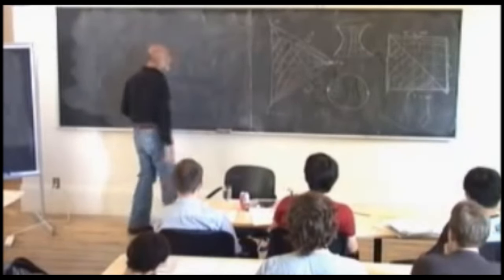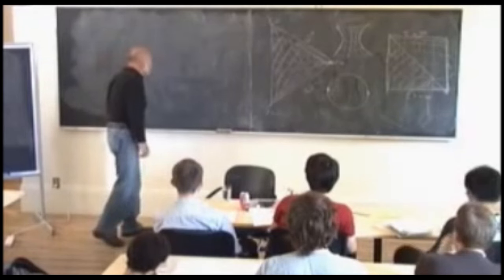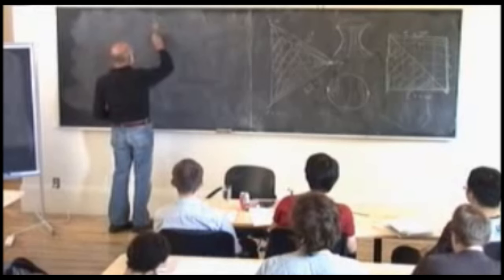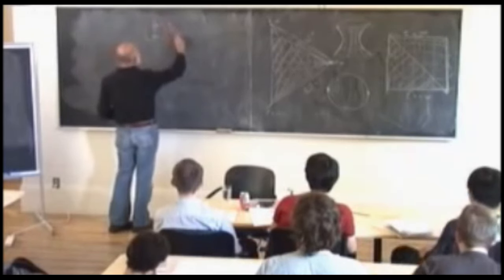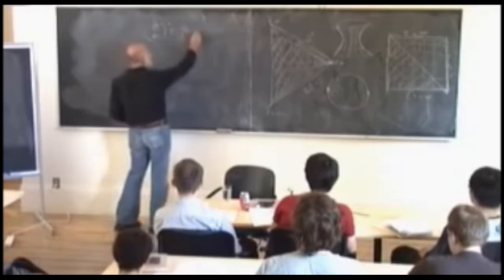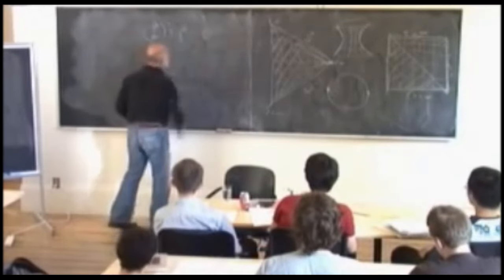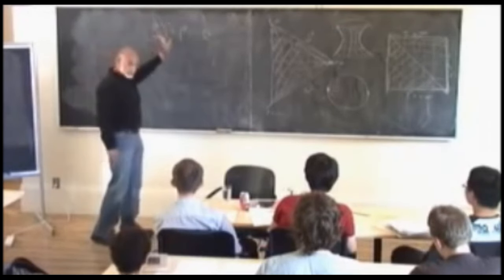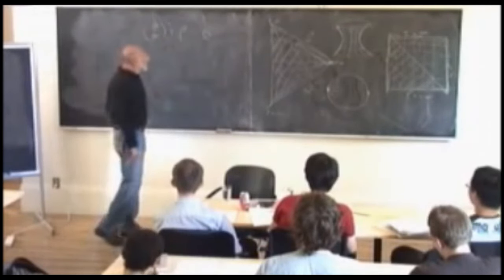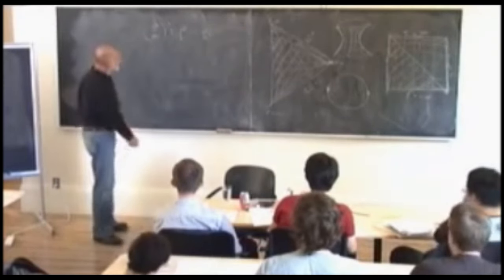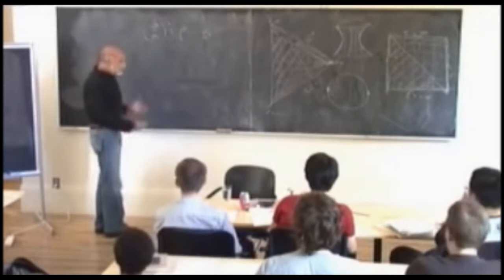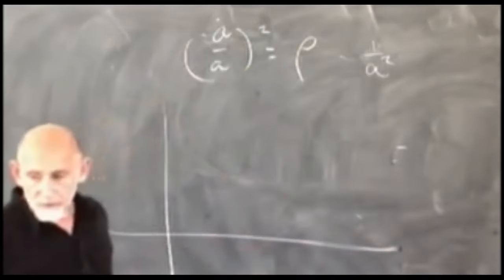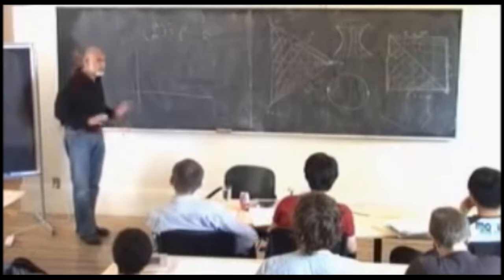Now let's come to bubble nucleation. Let's begin with a model for the energy density rho. Let's imagine there's a scalar field with a potential. The potential energy as a function of field phi, V(phi), has a certain shape. The energy density is the potential energy plus the field kinetic energy, phi-dot squared over two, assuming homogeneity so there are no spatial gradients.